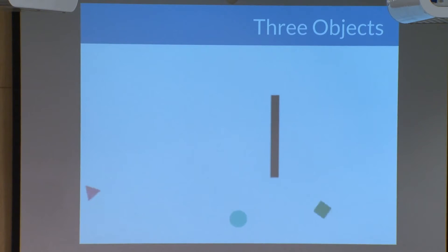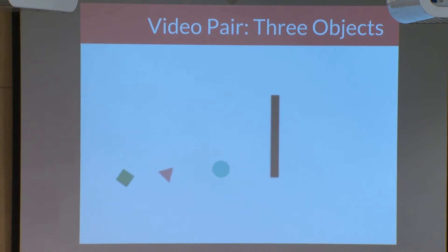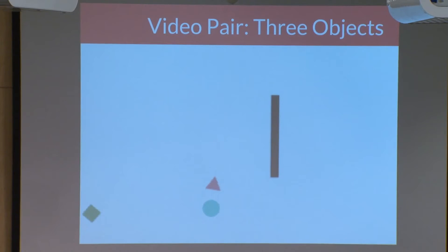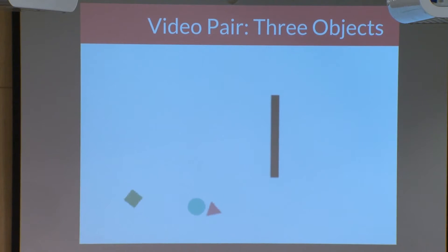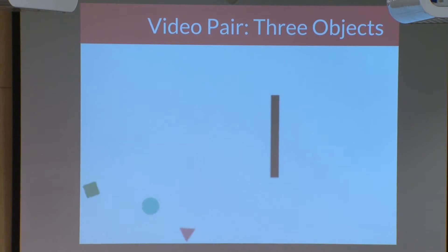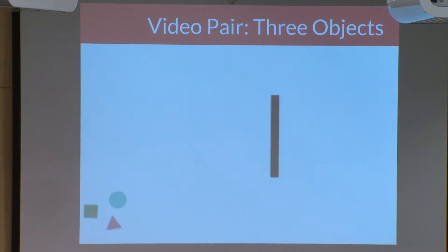Now I'm going to show the paired video of three objects. While this is modeled by the same characters, you can see that there are different behaviors. In this case, the purple triangle and the circle are attracting one another. Once again, people contextualize this relationship in a very different way. For example, one observer described it as: 'Cyan circle was looking for a fight and found one in the purple triangle. They hit each other until they could no longer move.'